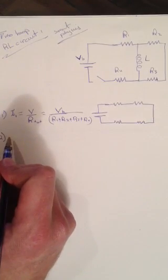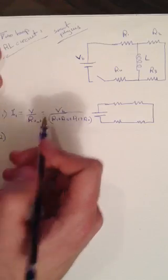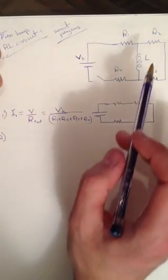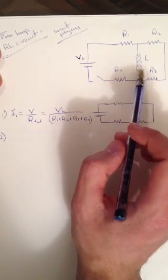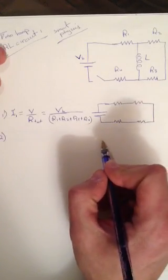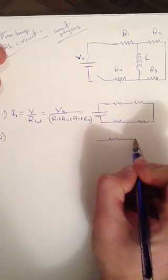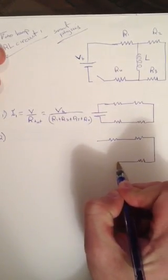The next question asks: what is i1 at time infinity — when the switch has been closed for a long time? When the switch is closed for a long time, the inductor acts like an open wire. So this is the new circuit with an open wire in place of the inductor.